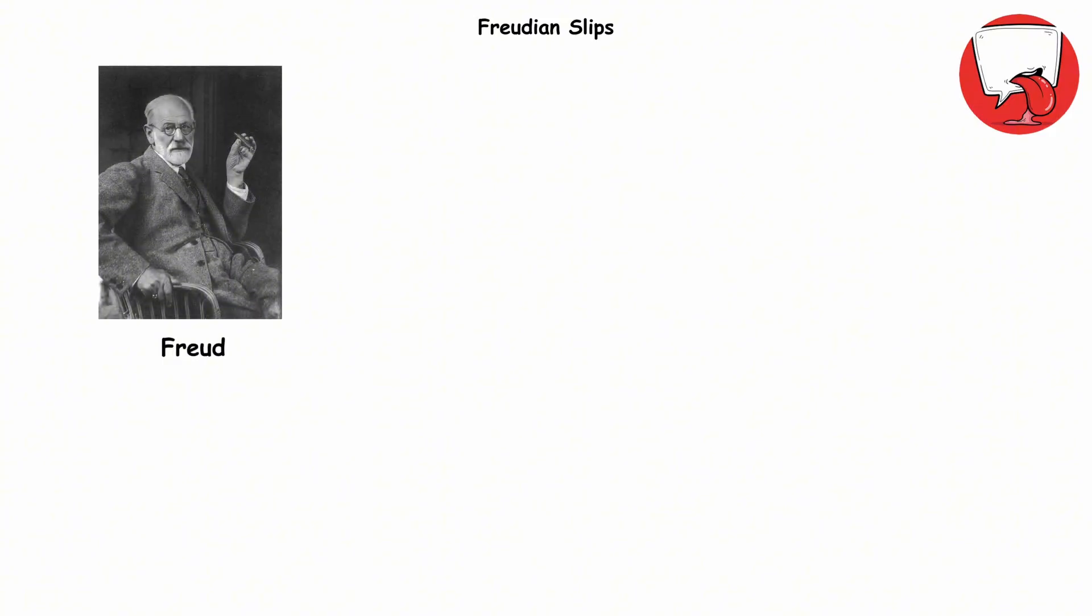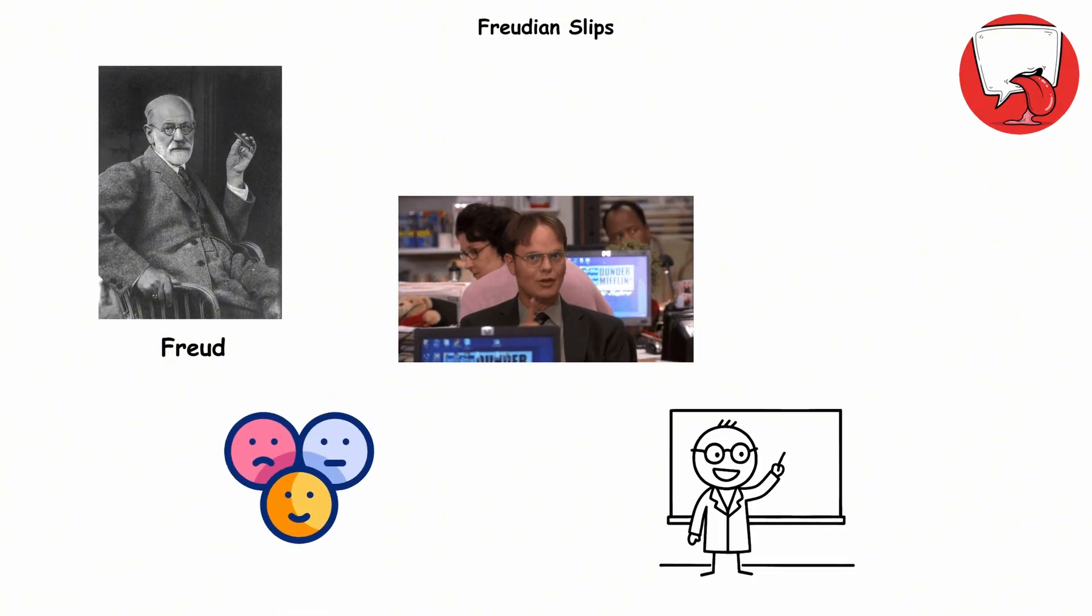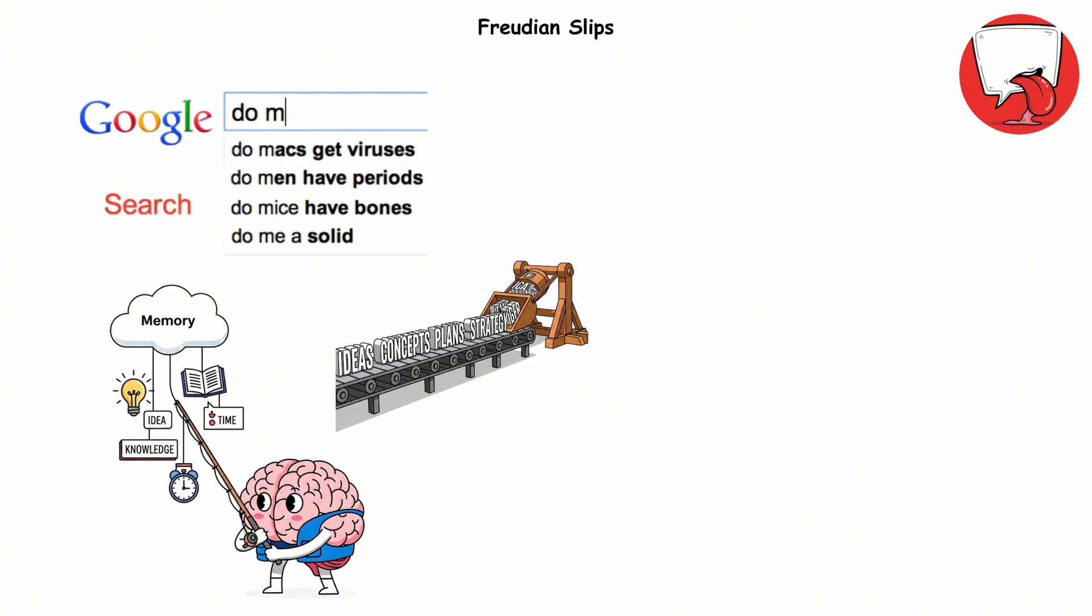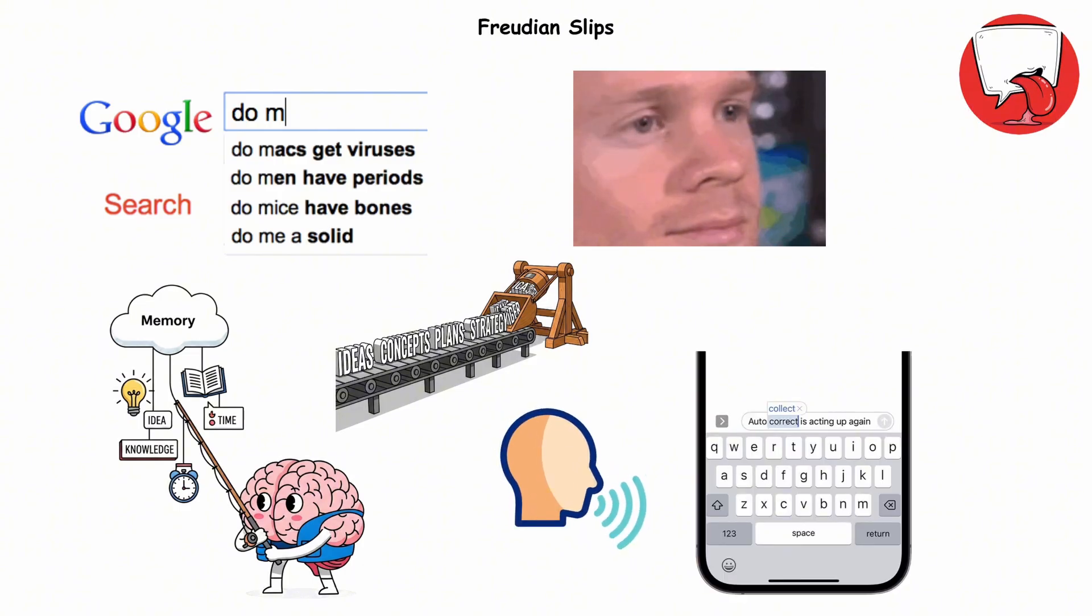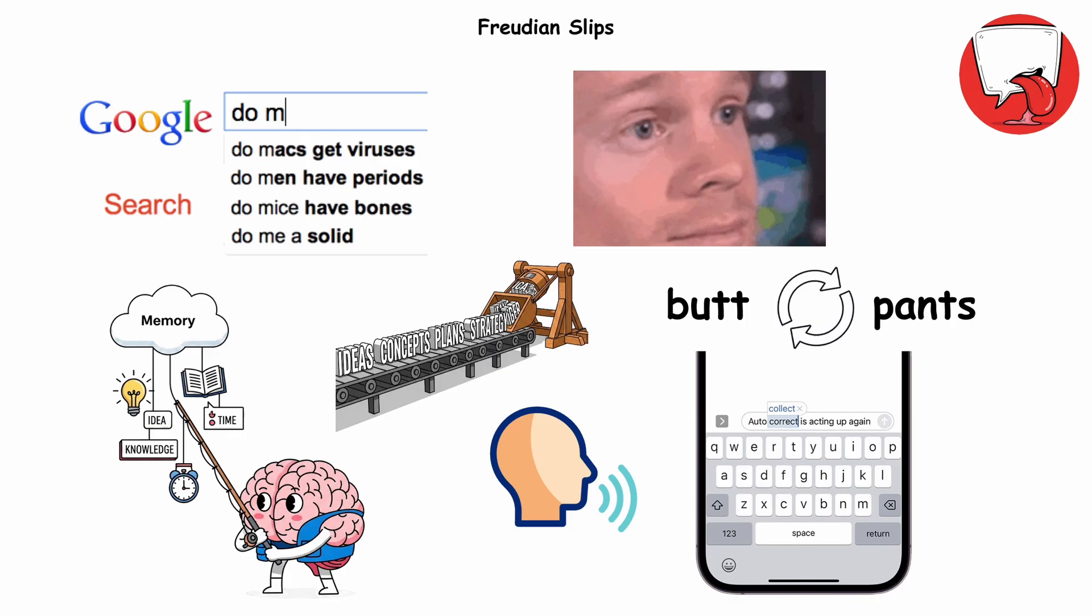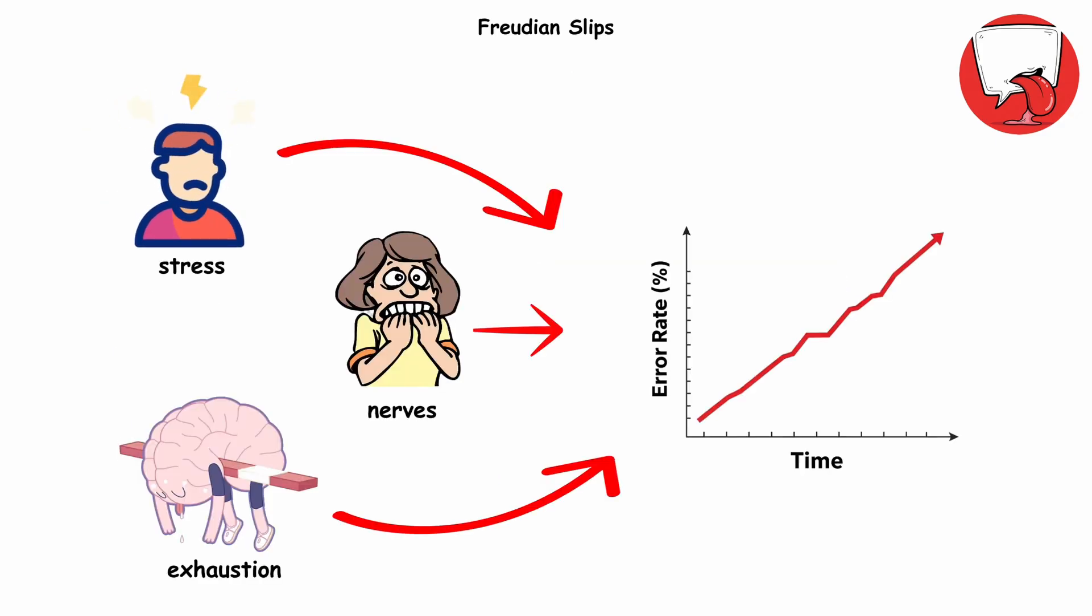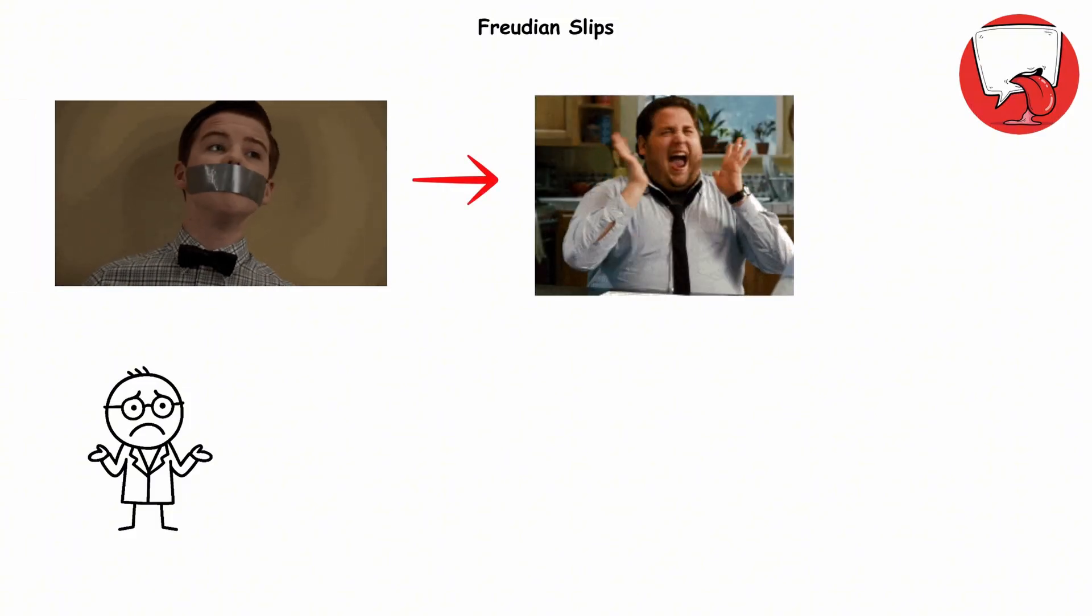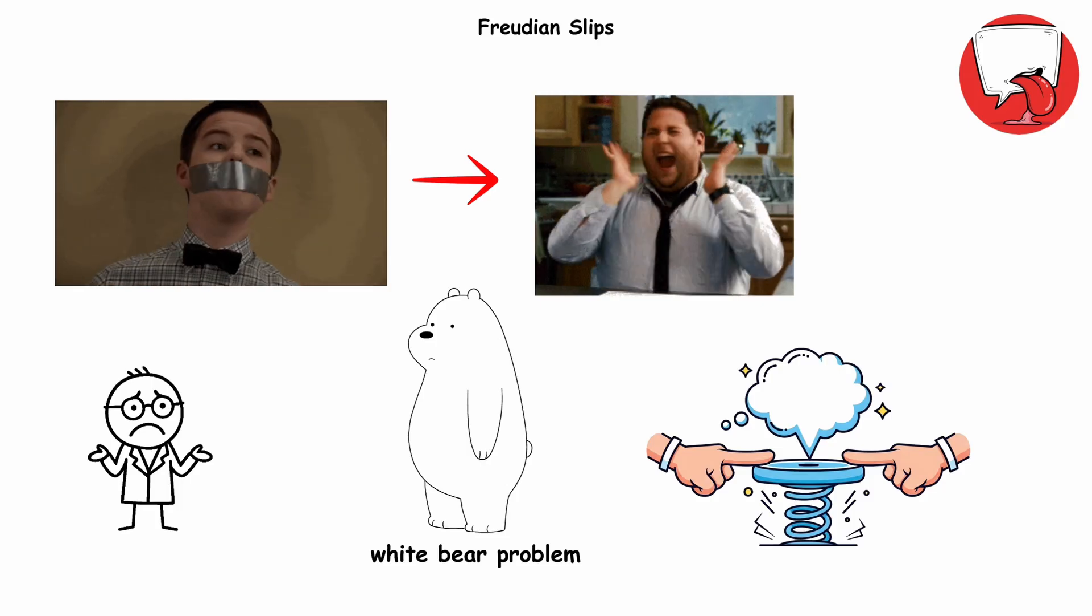Freud thought these slips exposed your secret feelings. Today's scientists say it's less hidden desires and more software bug. Your brain is running the world's fastest autocomplete. It's pulling words from memory, lining them up, and launching them out, all in the blink of an eye. And just like autocorrect, it sometimes swaps in the wrong option. Stress, nerves, or plain exhaustion crank up the error rate. Worse, trying not to say something makes it way more likely to escape. That's the white bear problem. The more you push it down, the louder it barges through.